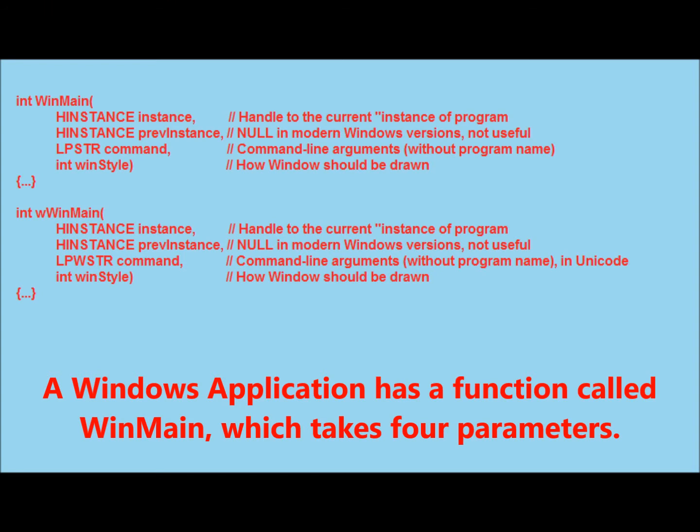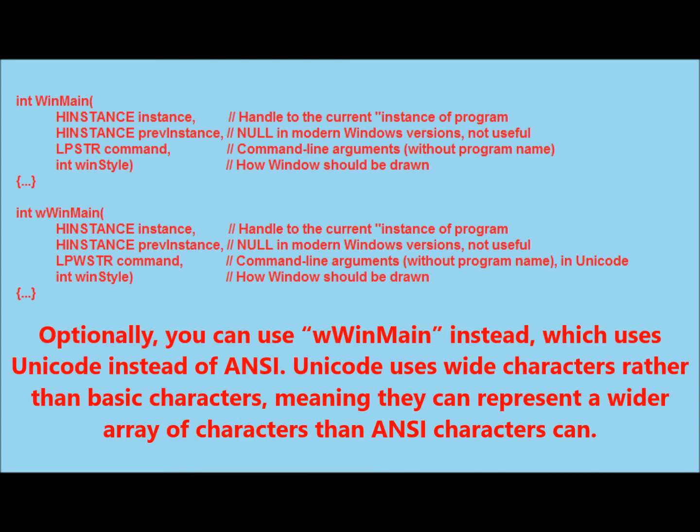A Windows application has a function called WinMain, which takes four parameters. Optionally, you can use wWinMain instead, which uses Unicode instead of ANSI. Unicode uses wide characters rather than basic characters, meaning they can represent a wider array of characters than ANSI characters can.